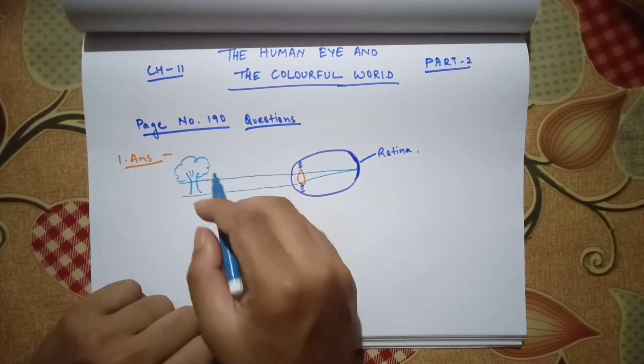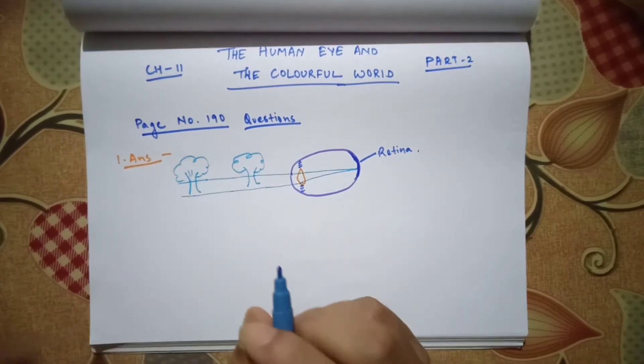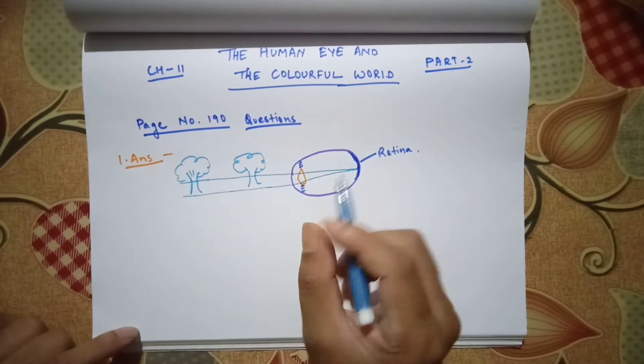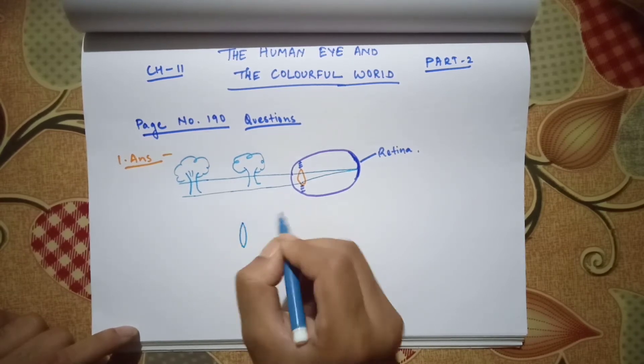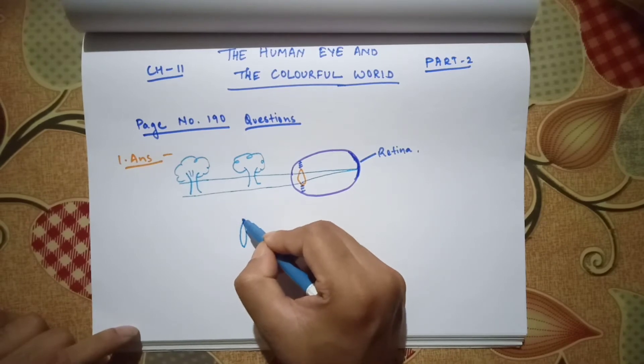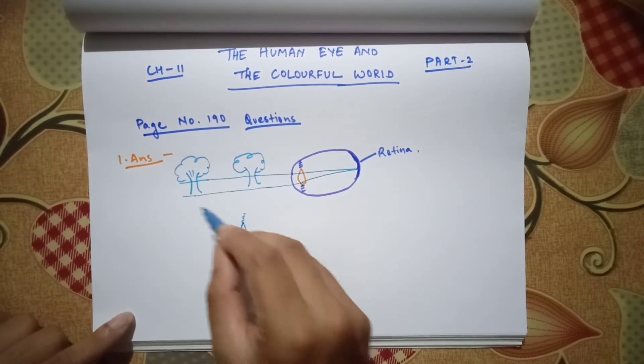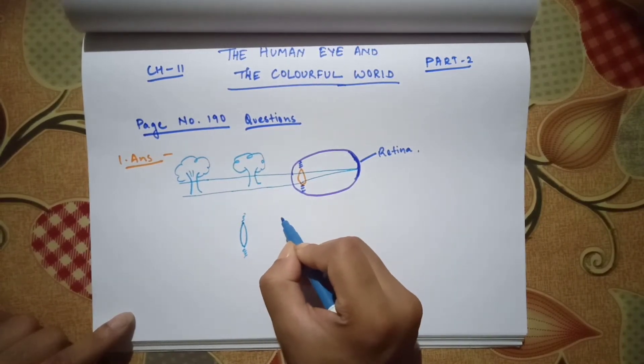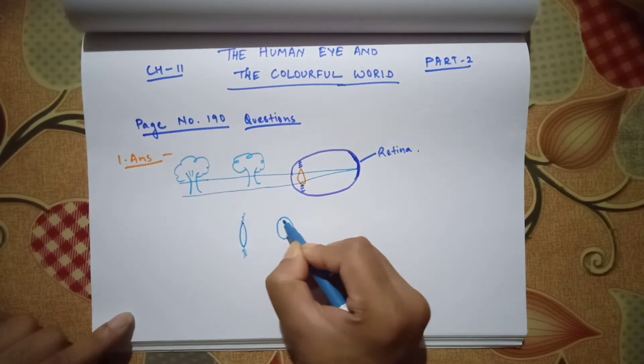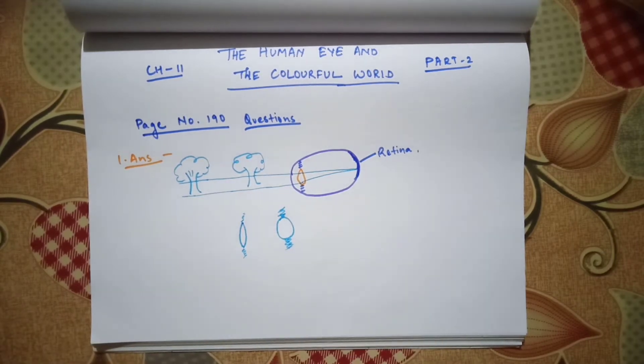Let us take this as a tree distant from our eye and this tree near to our eye. To see the far object, our eye lens gets thin because of the ciliary muscle which stretches itself. For the nearby object, the ciliary muscle helps the lens to become thick and view the nearby objects.